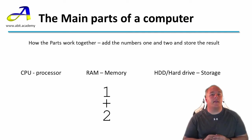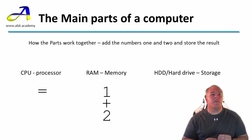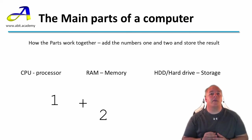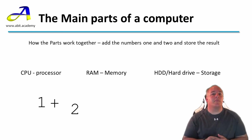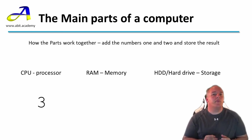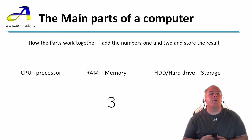Now I enter the equals symbol, which goes through the CPU. This time, the CPU works out that it needs to perform the calculation, so it calls the information back out of RAM and works out the result. Assuming we want to store this result long term, it will then output it to the hard drive.